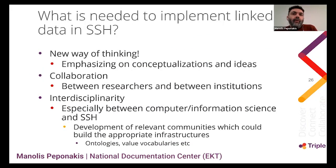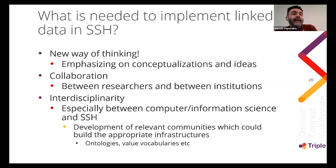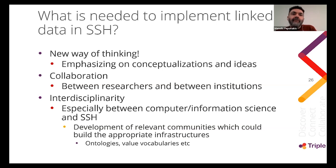What is needed to implement linked data in the domain of social sciences and humanities? First, a new way of thinking — mainly emphasizing conceptualizations and ideas, thinking at a more abstract level rather than focusing on programming or technical artifacts. Second, collaboration — between researchers and between institutions. And finally, interdisciplinarity, especially between computer science, information science, social science, and humanities. This way, it would be easier to develop relevant communities that could build the appropriate infrastructure.